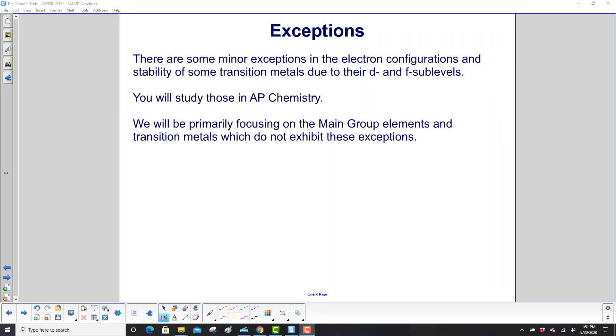There are some minor exceptions in the electron configurations and stability of some of the transition metals due to their D and F sublevels. You will study those in AP Chemistry. We'll primarily be focusing on the main group elements and transition metals which do not exhibit these exceptions.